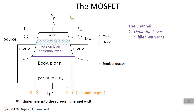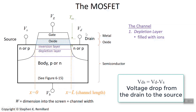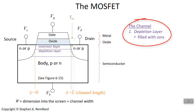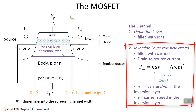Let's develop a model for the current going between the source and the drain when there's a potential difference between them. Inside the channel there are two charge regions: the depletion layer and the inversion layer. The depletion layer only has the ions — positive donor ions if N-type, negative acceptor ions if P-type. In the inversion layer you have those ions, but more importantly a large number of mobile charges of the opposite type. If the body is P-type, the inversion layer is full of electrons; if N-type, it's full of holes.